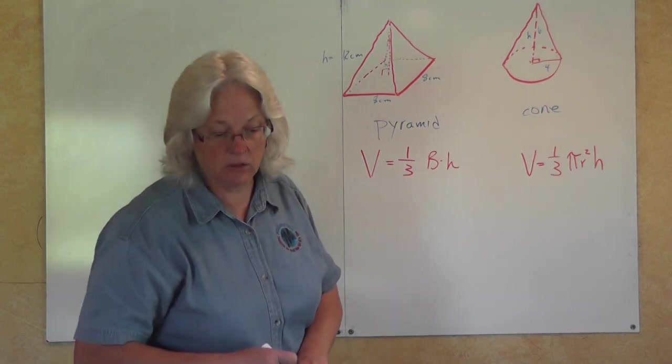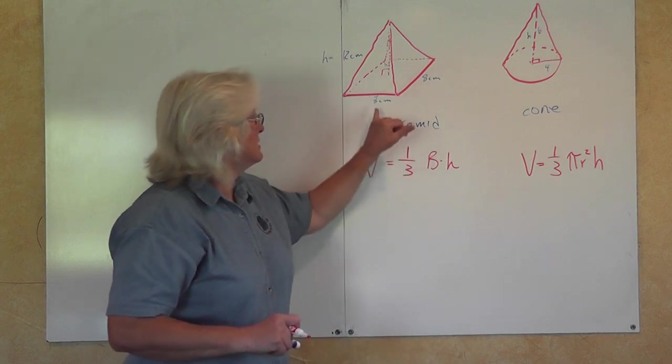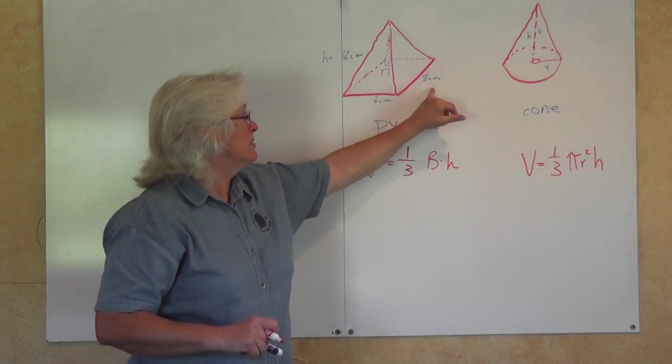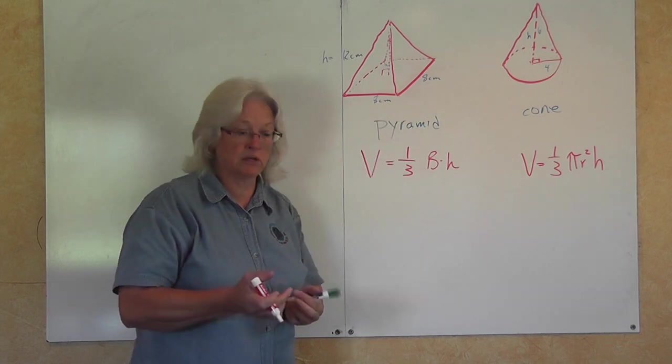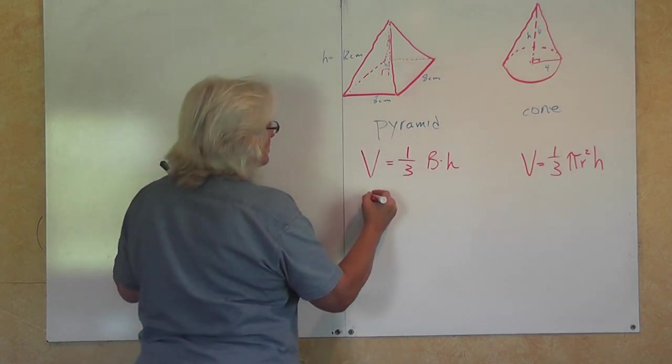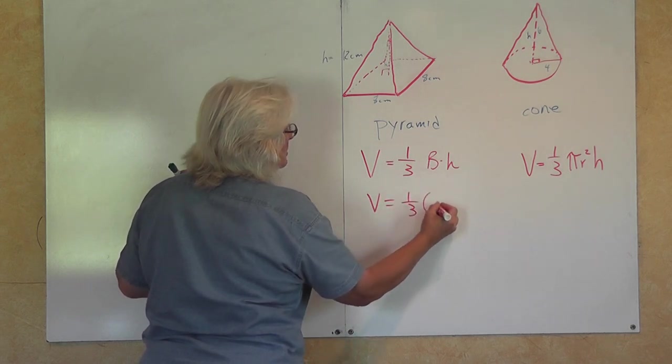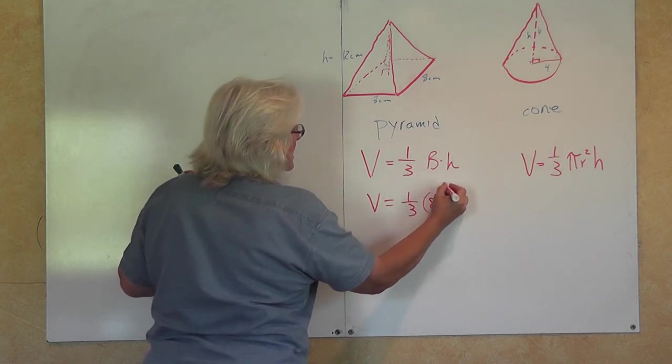So let's go ahead and look at this one. This is example one. It says we have a square pyramid here. The base is eight centimeters times eight centimeters. So the volume is going to be one-third times eight squared.